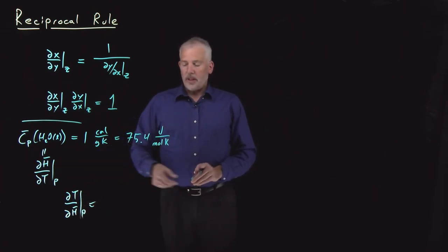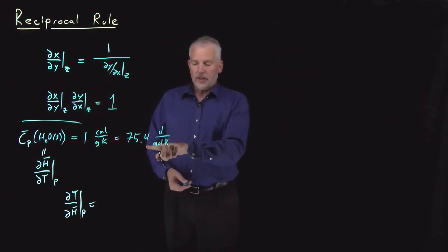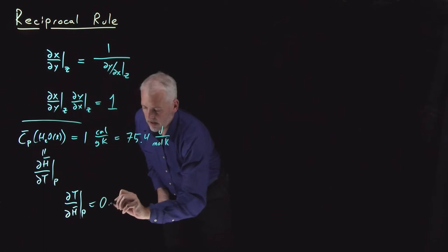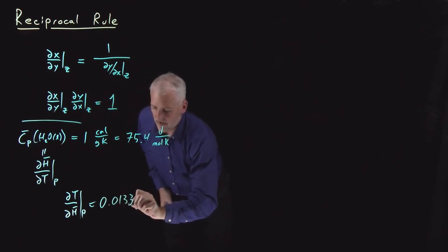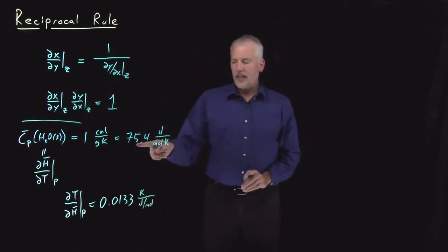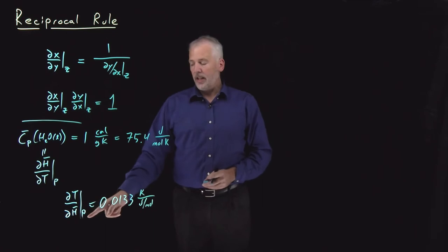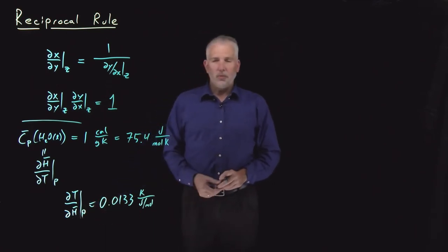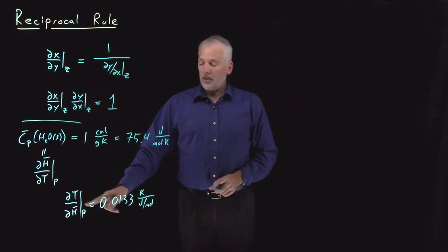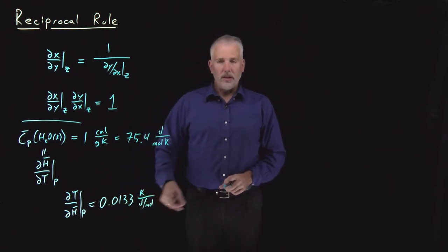That's just the reciprocal of this quantity. So 1 over 75.4, that's 0.0133 in units of kelvin moles per joule, or kelvin per joule per mole if we prefer. By taking the reciprocal of that quantity, now we have an answer to questions like, if I supply one joule per mole of enthalpy to the material, how much does it raise the temperature? It raises the temperature by 0.01 kelvin or so.